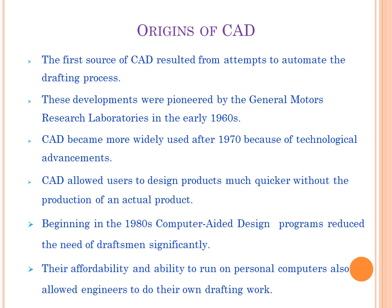Before the 1970s, diagrams were drawn manually using pencil, draft tools, and paper. But after the 70s and 80s, the computer dominated all drafting of diagrams in mechanical, electrical, and civil fields. The ability to run personal computers also allowed engineers to do their own drafting. After the 80s, most engineers used computers to draft electrical, civil, and mechanical engineering drawings.